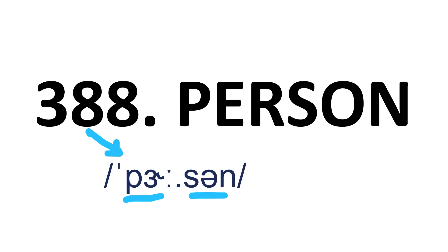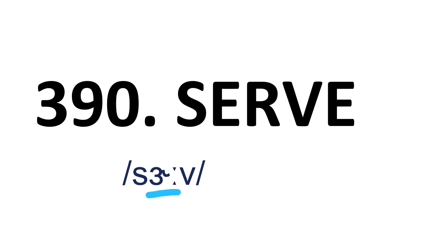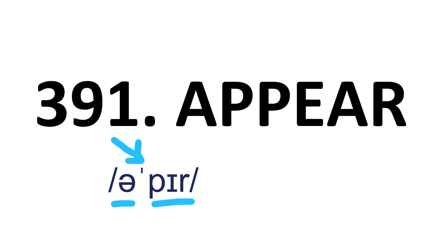Person — it's a two-syllable word and stress is on the first syllable. Person. Money — it's a two-syllable word and stress is on the first syllable. Money. Serve — it's a one-syllable word. Serve. Appear — it's a two-syllable word and stress is on the second syllable. Appear.